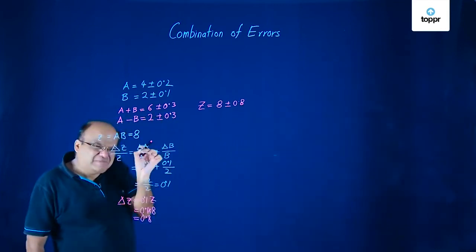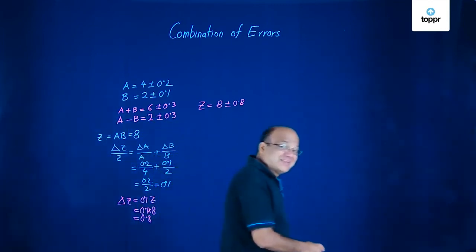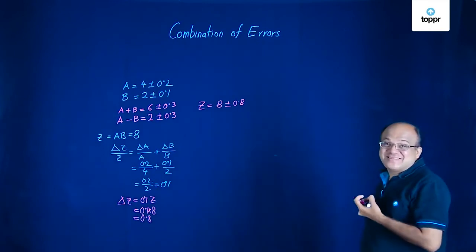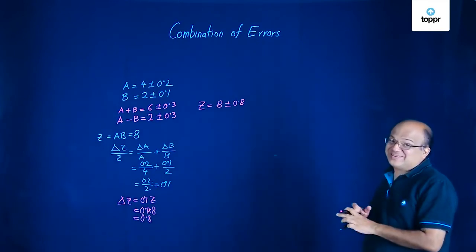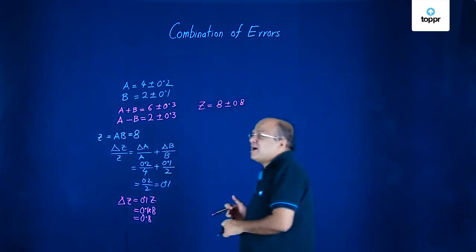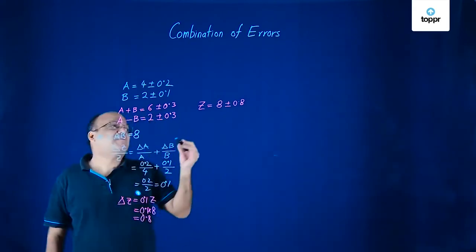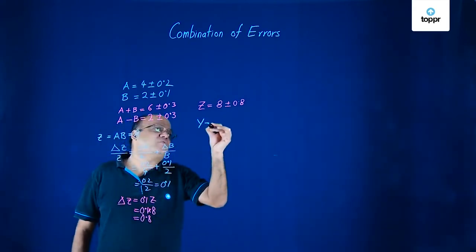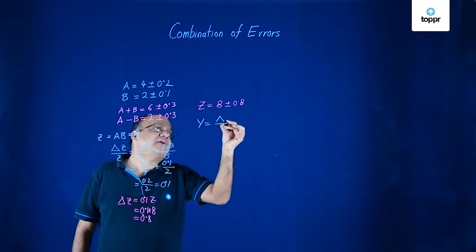Our Z will be 8 plus minus 0.8. When you are multiplying or dividing, fractional errors are added. Remember that. What will be Y? That is A by B. What will be A by B?